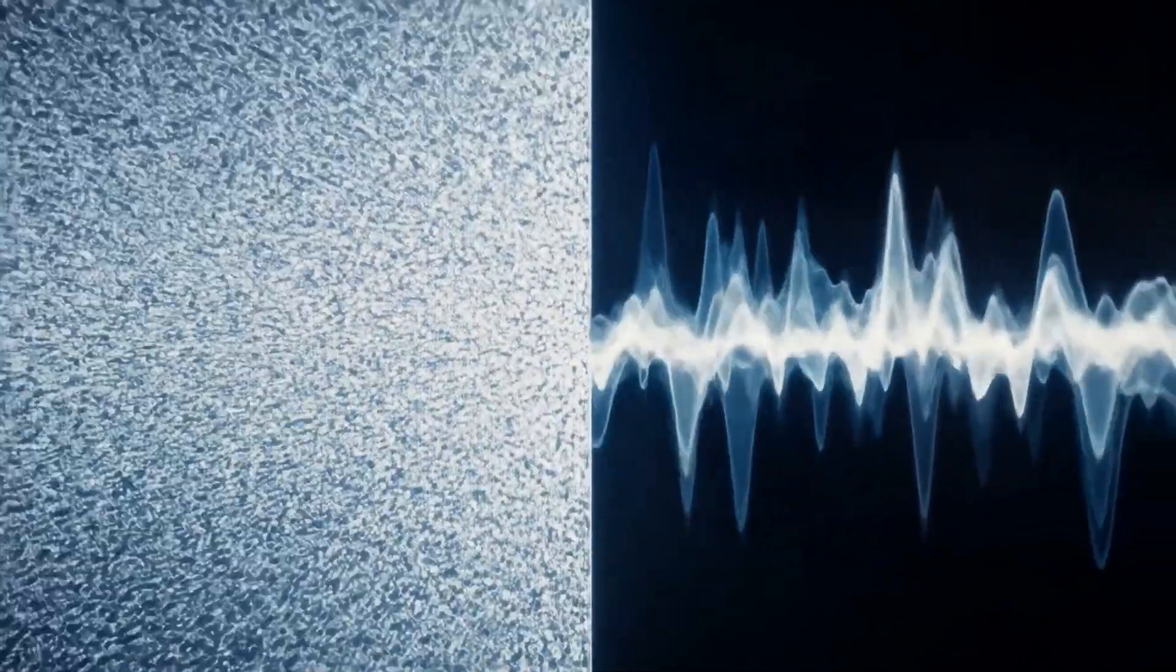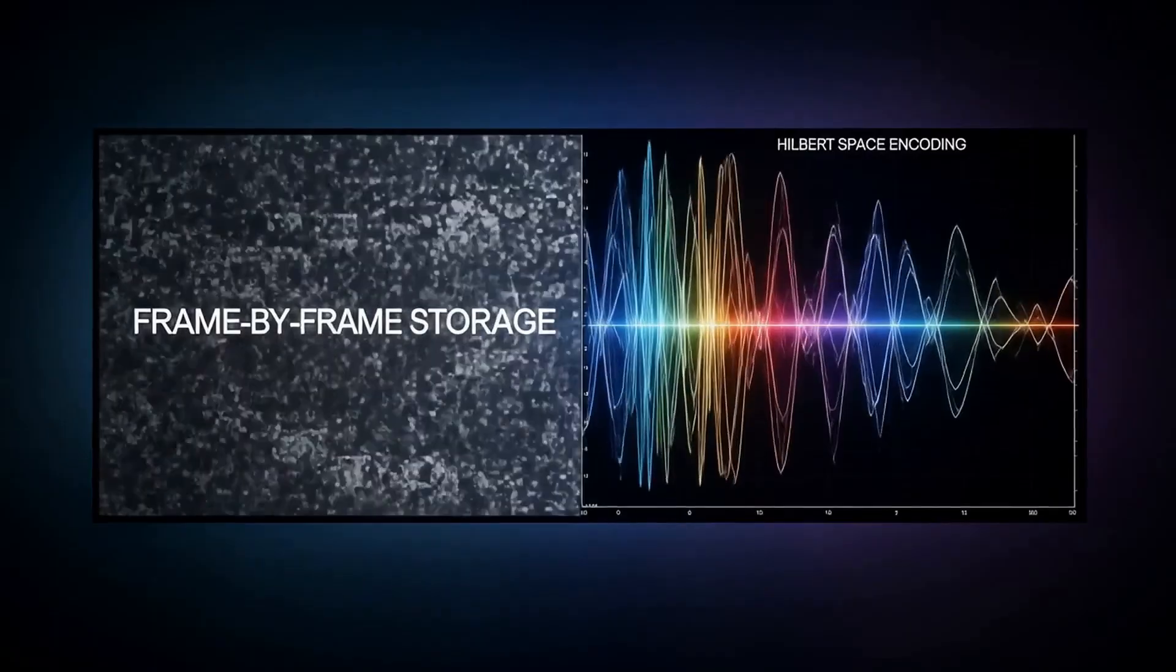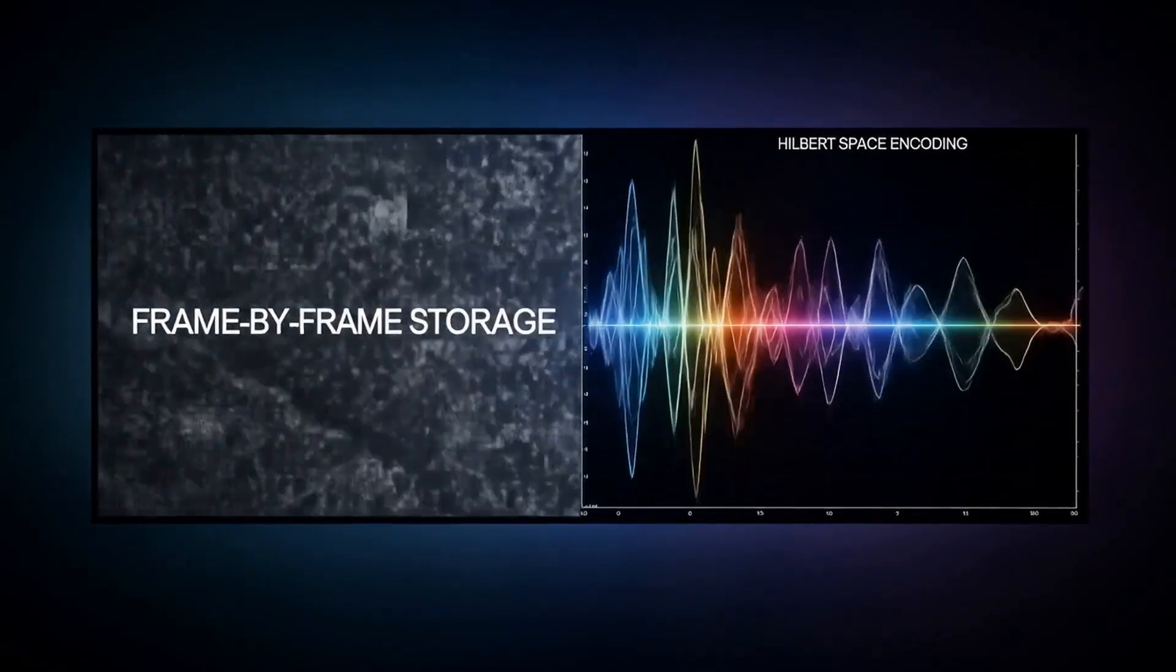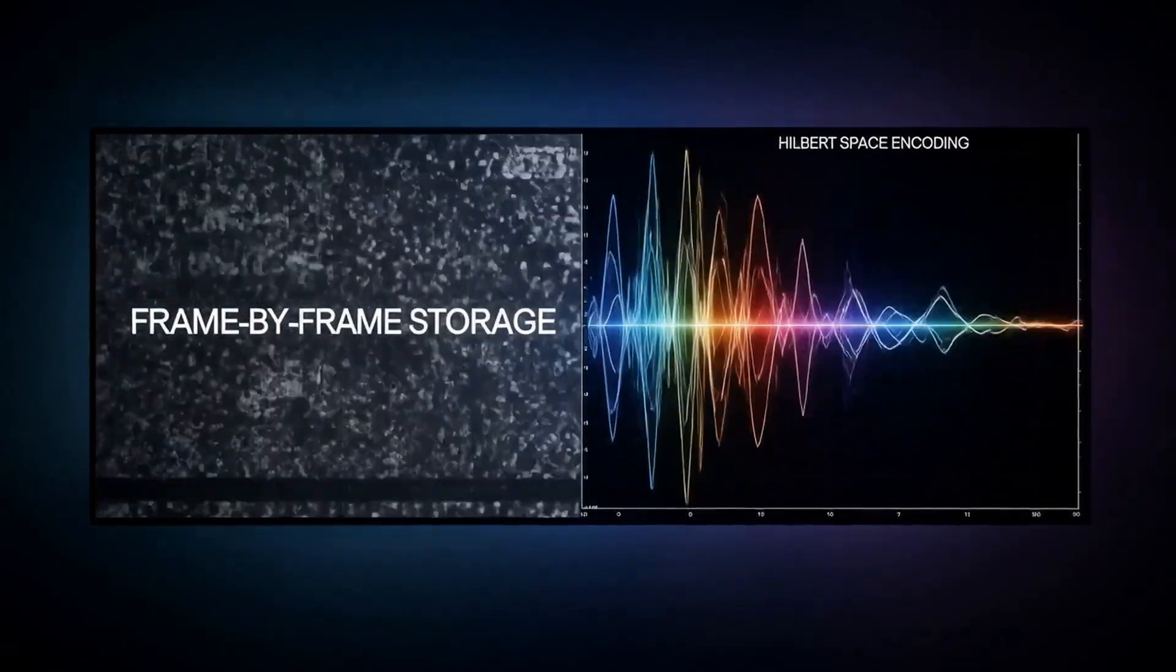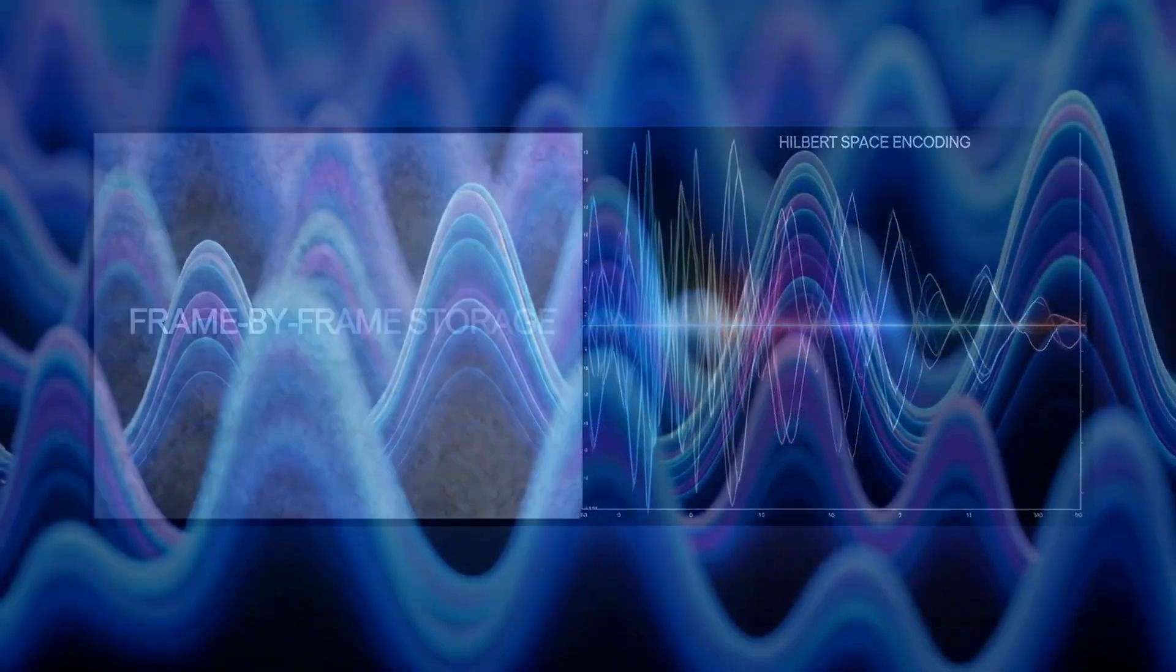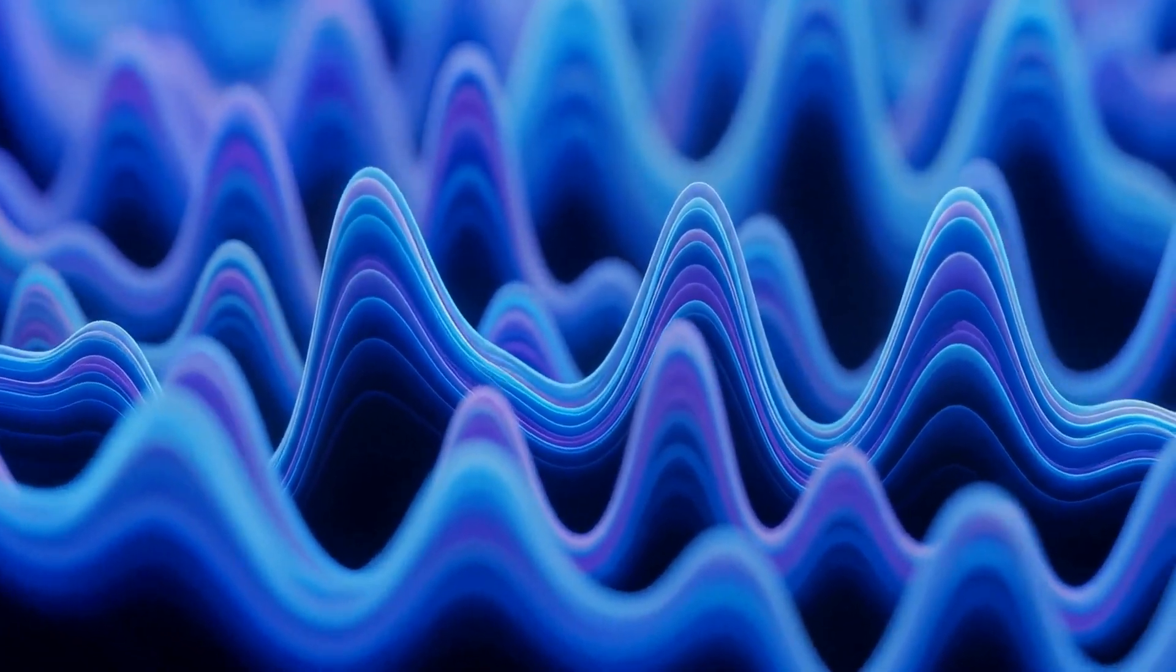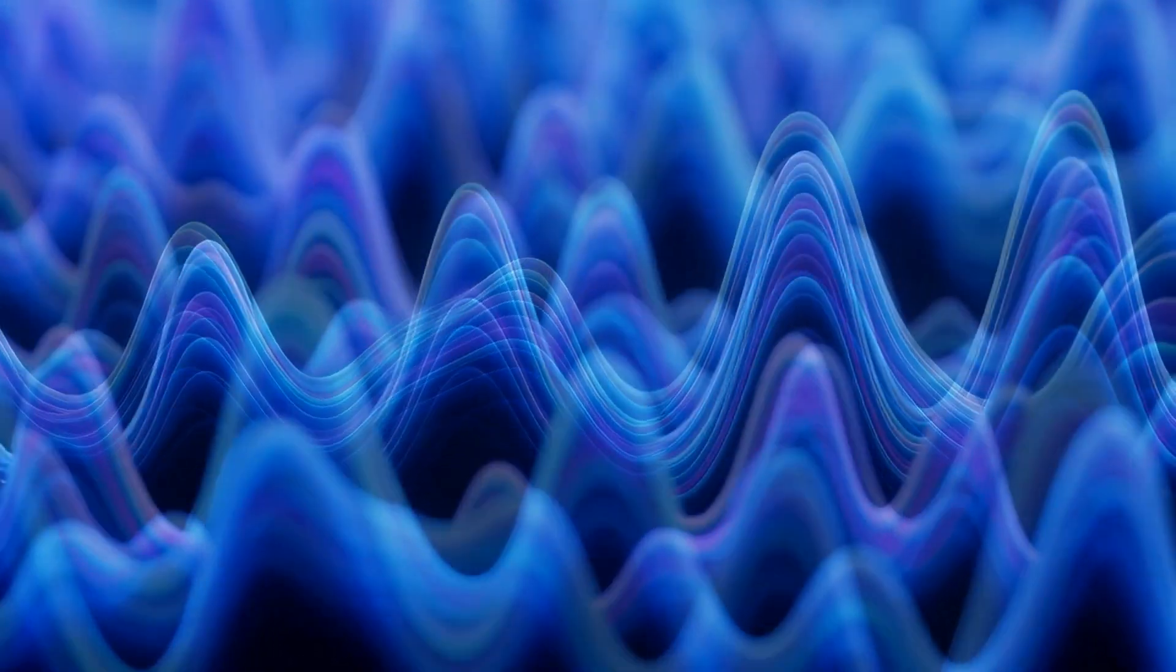In effect, we replace rasterization with interference. What current systems do inefficiently through frame-by-frame storage, delta compression, and transform coding, we accomplish natively by encoding only the frequency and amplitude of each component in Hilbert space.